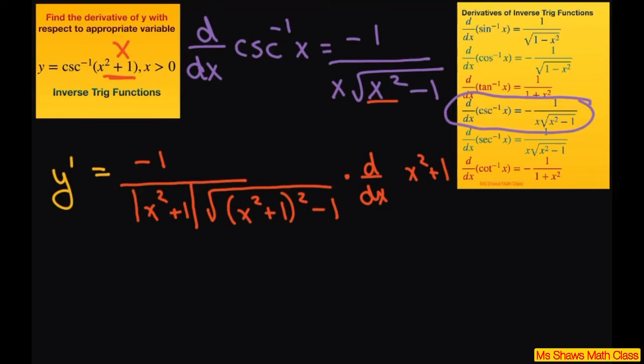Alright, so let's simplify this y prime equals, now if you differentiate this that's 2x. So 2x times negative 1 is negative 2x. And then you're going to have, divide it by, absolute value of x squared plus 1.